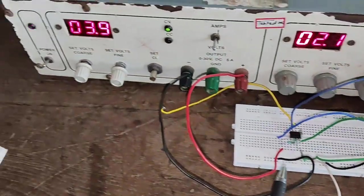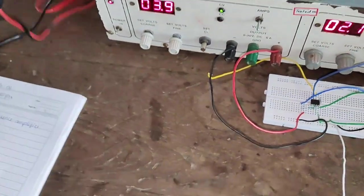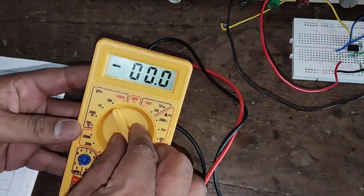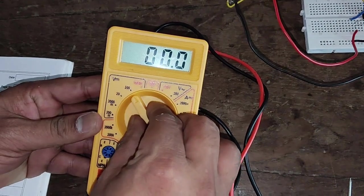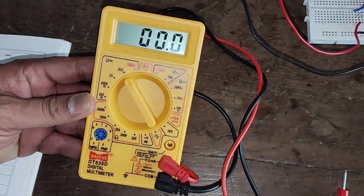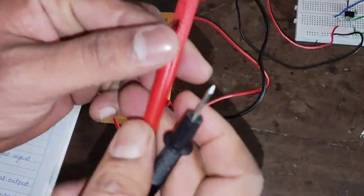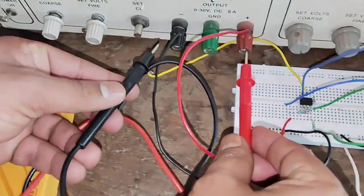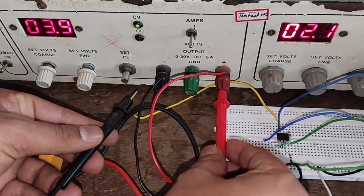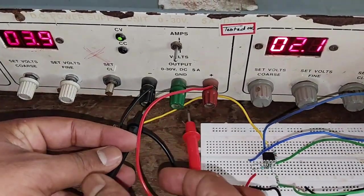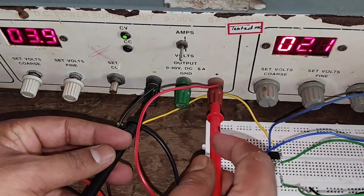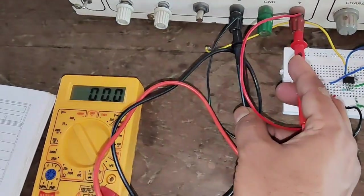Now let's measure the input voltage first with the help of multimeter. In this multimeter, first set the DC voltage as 200 volts.